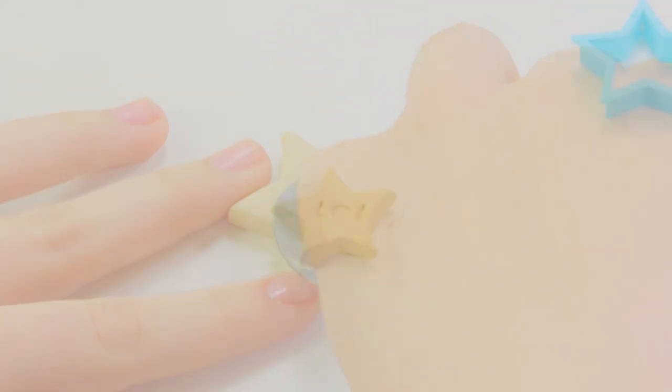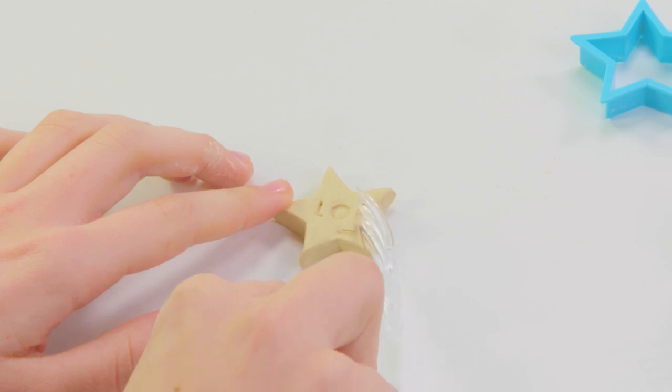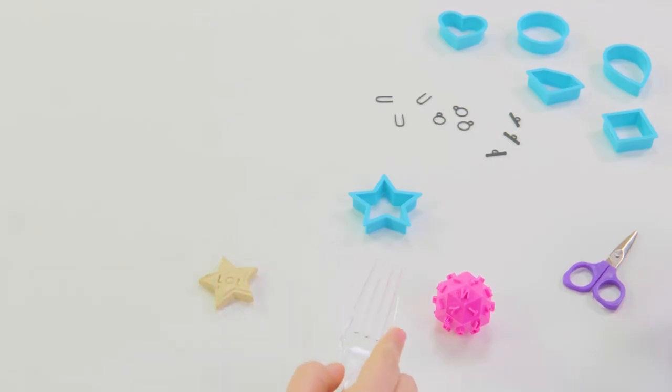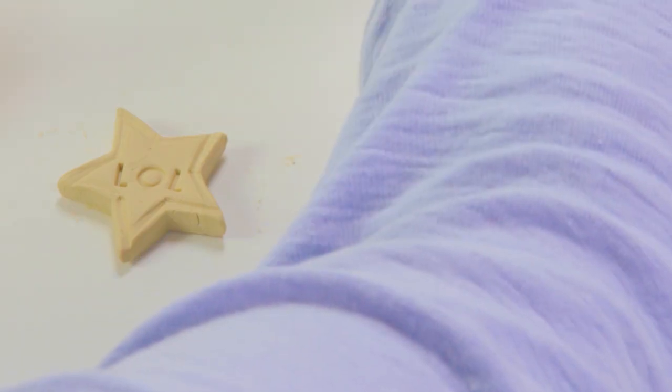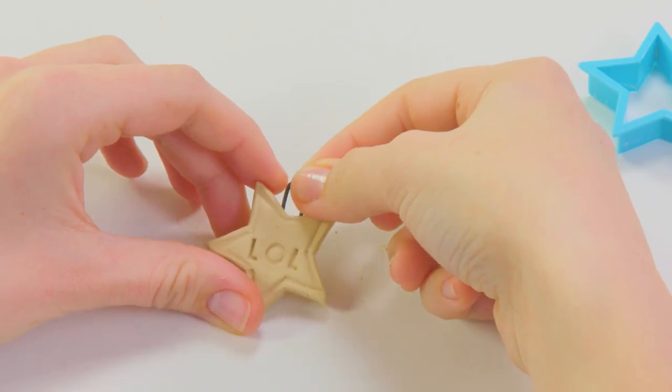To finish off your pendant's design, you can use extra bits of clay or household items to give your pendant that special touch. I'm using a plastic fork to outline the edges of the star. There's one last step before letting the pendant dry. Push a pendant hook through the top of your shape, leaving room for the necklace cord.